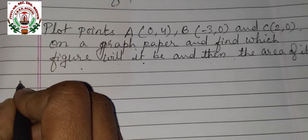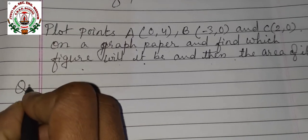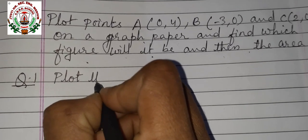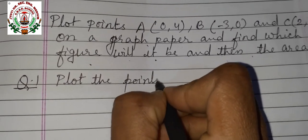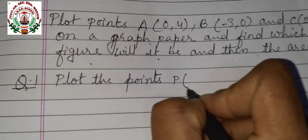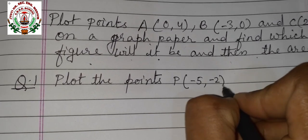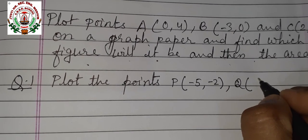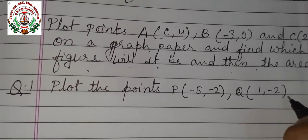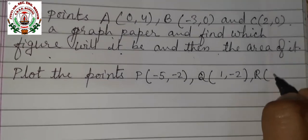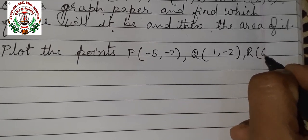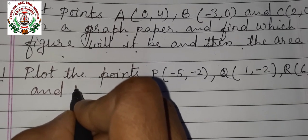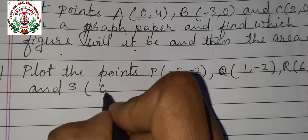Children, I will try this question at home. That is question number 1: plot the points P(-5, -2), Q(1, -2), R(6, 4), and S(0, 4) on graph paper.